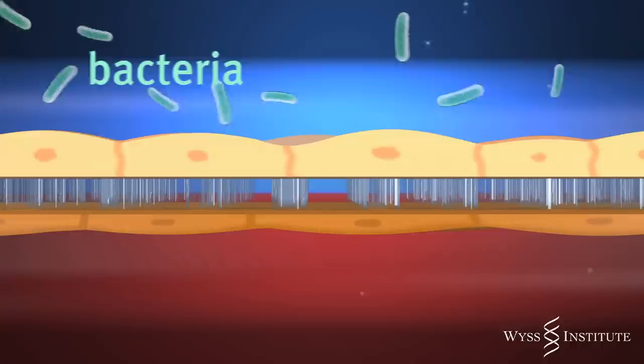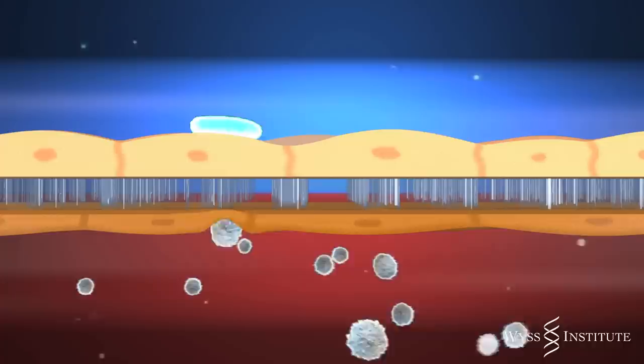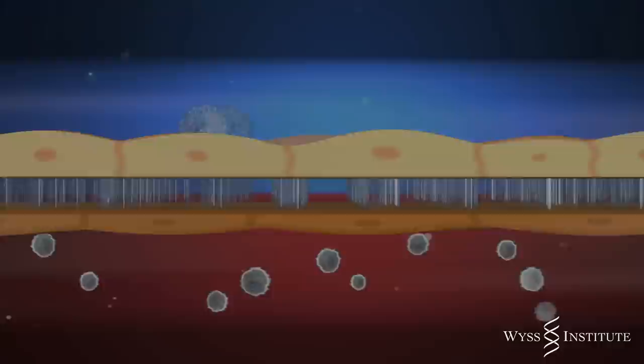To test how well the lung on a chip device replicates the natural responses of living lungs, we introduced bacteria into the air channel to mimic an infection and introduced white blood cells to the blood channel. We then saw the white blood cells migrate across the capillary cell layer through the pores of the central membrane and into the air space where they engulfed the bacteria.